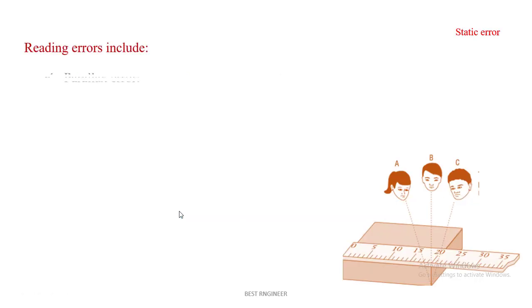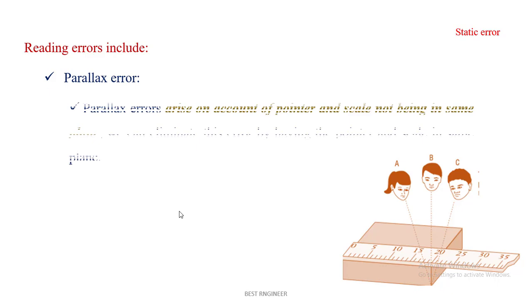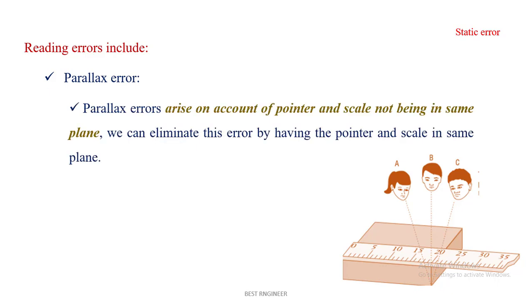Reading errors include parallax error. Parallax error arises on account of pointer and scale not being in the same plane. We can eliminate this error by having the pointer and scale in the same plane. See this picture: the pointer and the scale are given here. The operator B only can take the accurate reading because he only is seeing perpendicular to the scale.